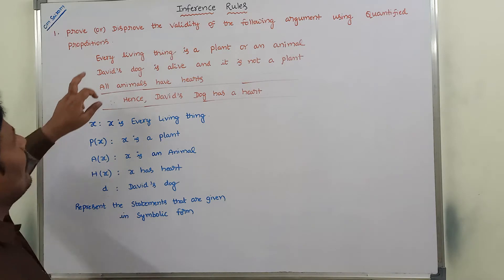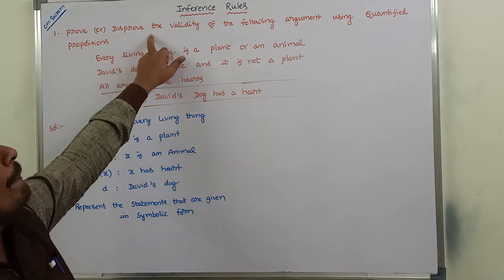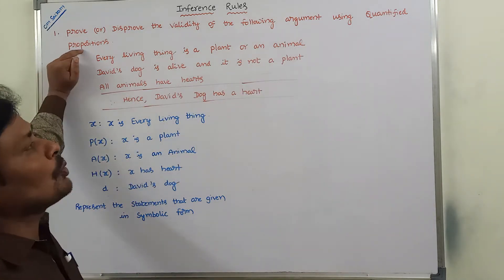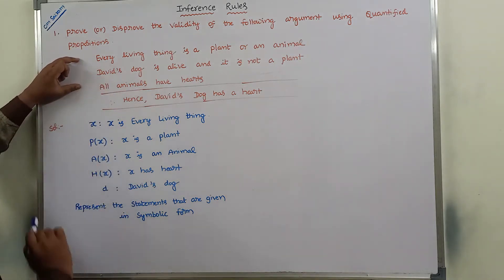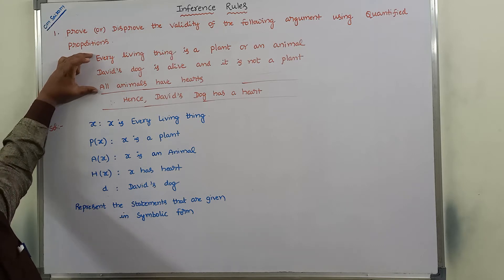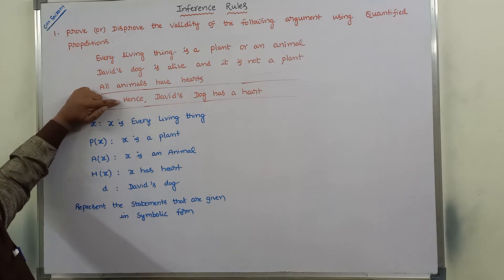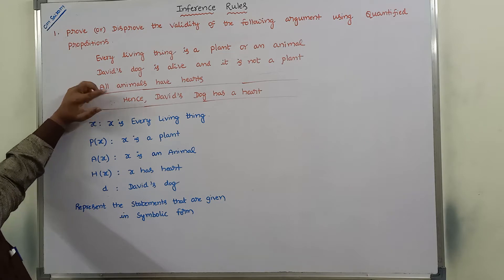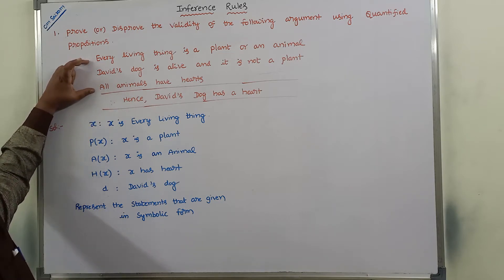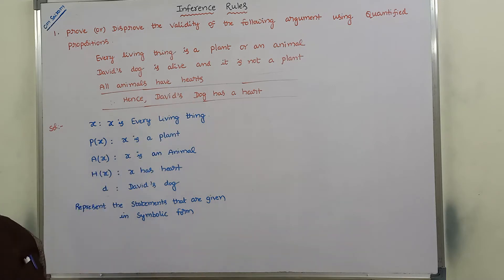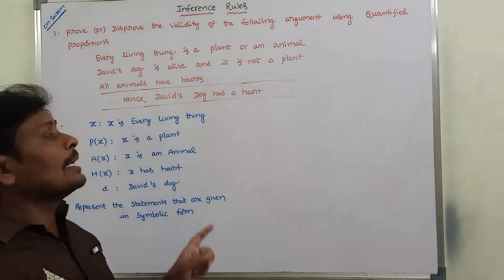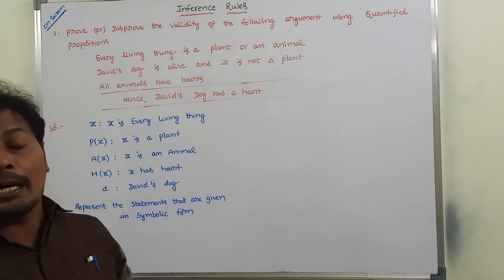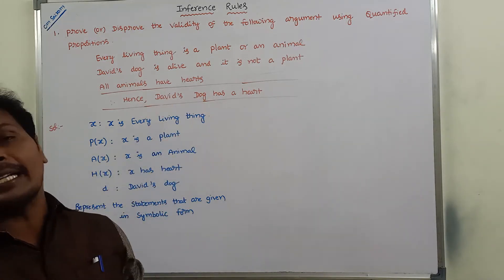The given problem is: prove or disprove the validity of the following argument using quantified propositions. The first three are the given propositions and the last one is the conclusion. We have to prove that these three given propositions derive this conclusion or not. If they do, it is a valid conclusion; otherwise it is an invalid conclusion.